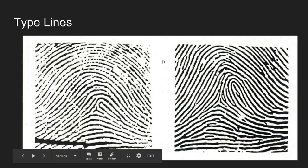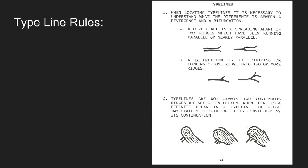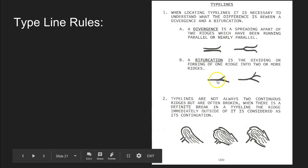Since the delta is so important in determining whether a fingerprint is a loop, we need to understand what type lines are. When locating type lines it is necessary to understand the difference between a divergence and a bifurcation. Some ridges as they travel along suddenly split into two — almost like a fork in the road. This is not a divergence, this is what we call a bifurcation.